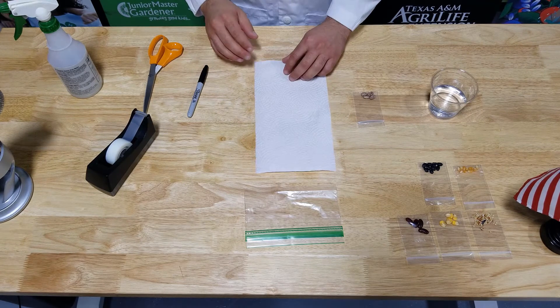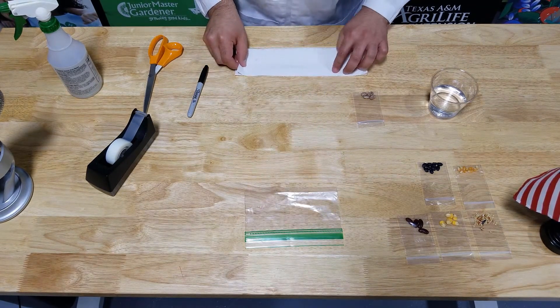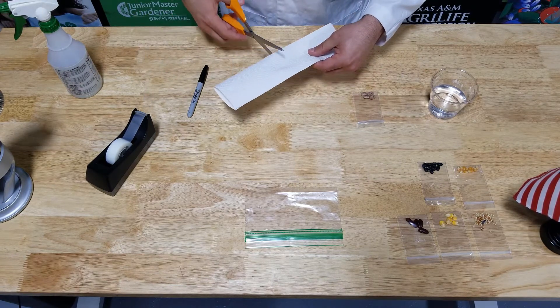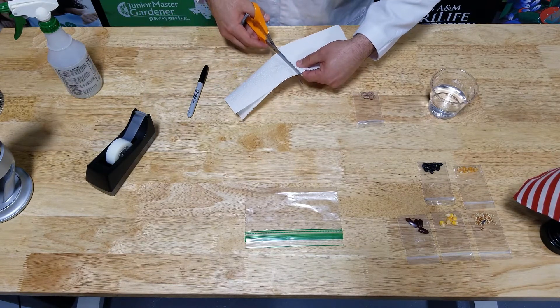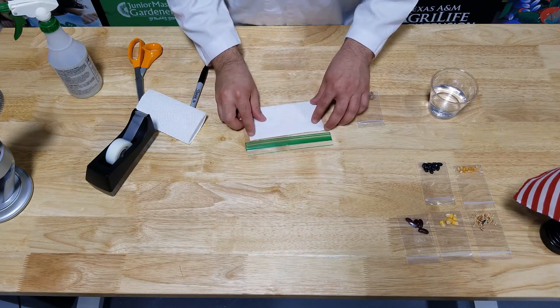For this experiment we're going to take our paper towel and based on the size of your baggie, I'm going to fold it long ways, hot dog style. And with parents' permission, make sure you can cut your paper towel using scissors.